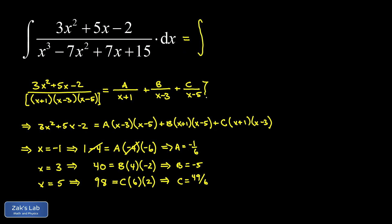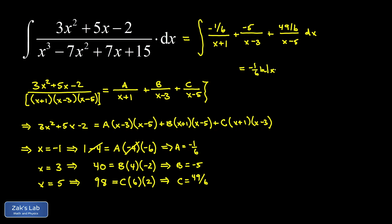Now our original integral can be rewritten as a sum of three simple fractions: negative one sixth over (x plus 1), plus negative five over (x minus 3), plus 49 over 6 over (x minus 5), all integrated with respect to x. Each of these integrates easily — one over a linear factor integrates to the natural log of that factor. The final answer is: negative one sixth ln|x plus 1| minus 5 ln|x minus 3| plus 49 over 6 ln|x minus 5| plus C.